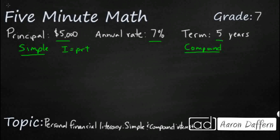So if you were to invest $5,000 at an annual interest rate of 7% for 5 years, let's go ahead and calculate this out. We've got 5,000 times 7% — we need to make that a decimal — times 5 years. Let's multiply 5,000 times 5, so that is going to equal 25,000 times 7%.